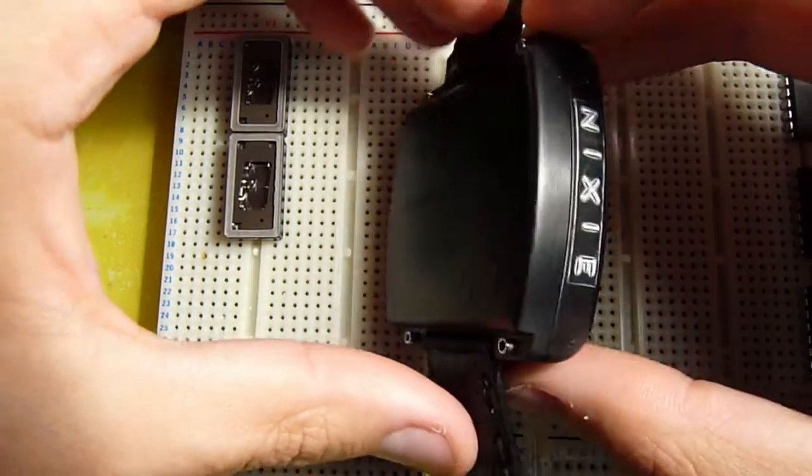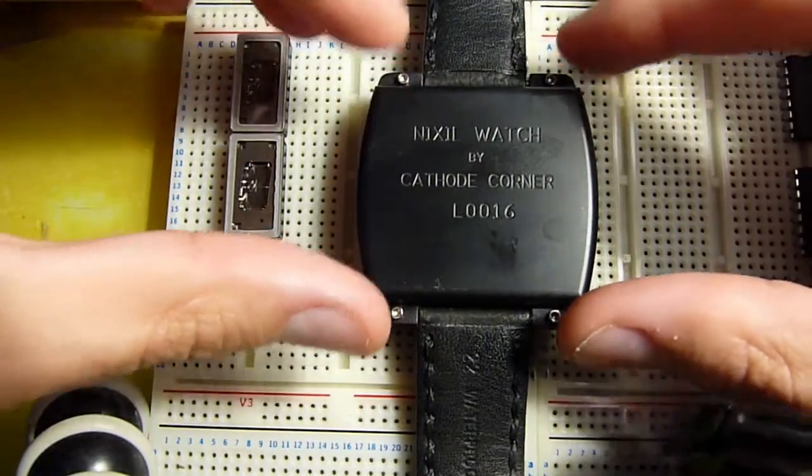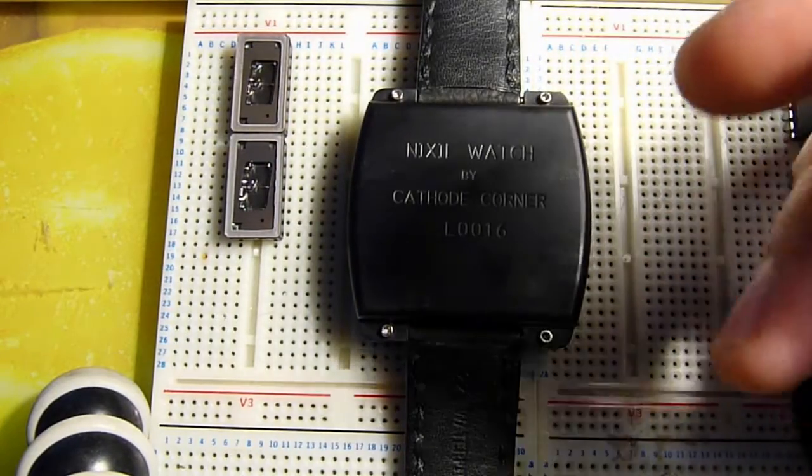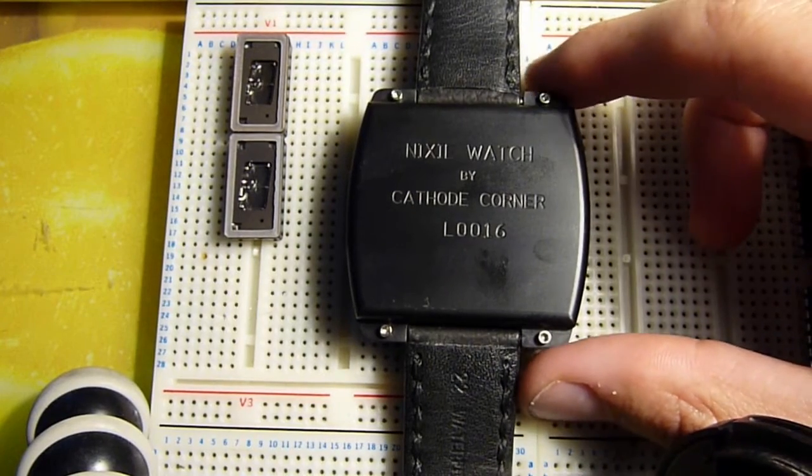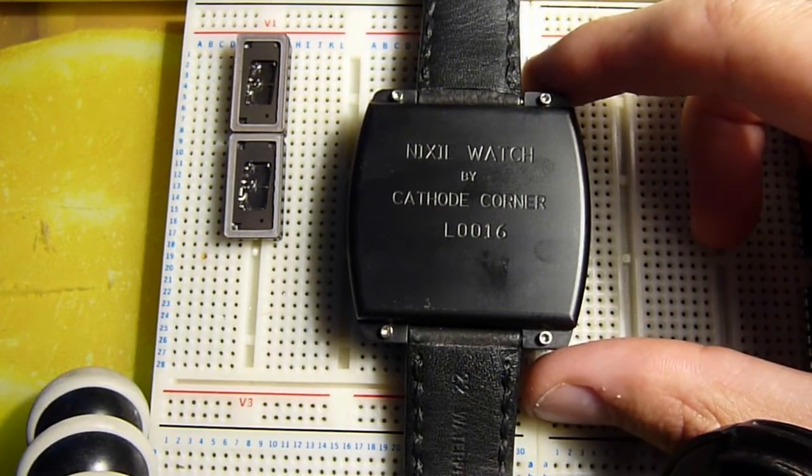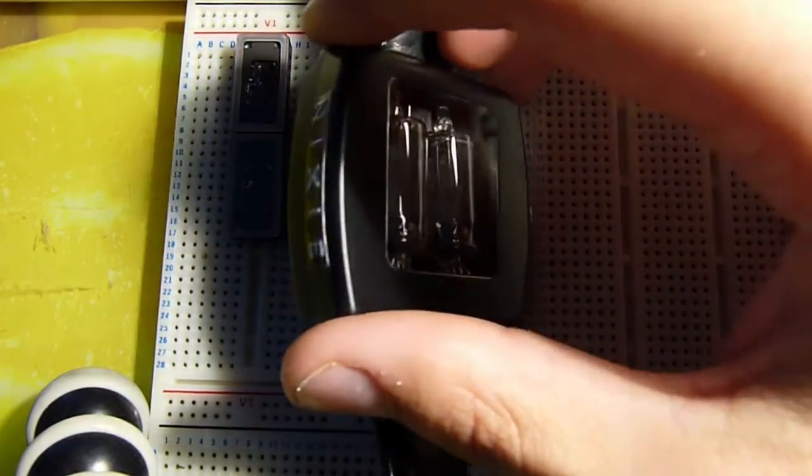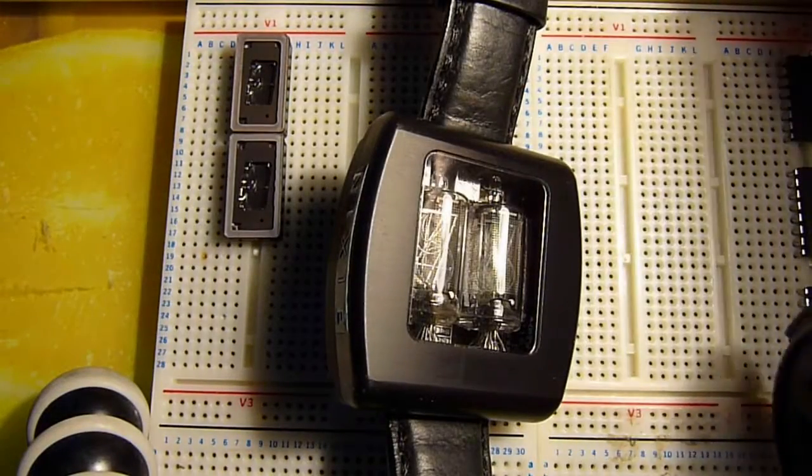And they are individually serial numbered, because these aren't going to be something that are mass manufactured. They are currently still being produced, which is why I'll put a link down to Cathode Corner in the description if you want one. And of course, this wouldn't be the Eevblog 9, if we didn't show you inside.